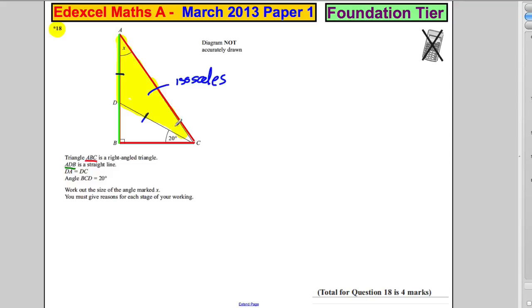In particular, if that angle is X, that angle must be X as well, because it's got two of the same angles. Now angle BCD is 20 degrees. B to C to D, this one here's 20. Work out the size of the angle marked X. You must state with reasons your workings.